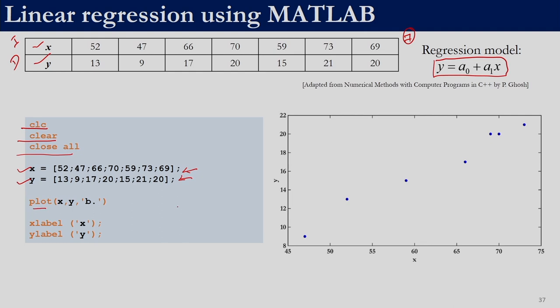When we say plot(x,y), we would not get scattered points but a plot where all points are connected by lines. We do not want that — we just want the points. So what we are doing is plot(x, y, 'b.') within single quotes. The 'b' stands for blue and the dot stands for placing a dot, so MATLAB will put a blue dot wherever the points are.